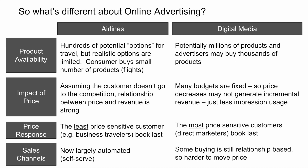They may simply generate more impressions. The other important dynamic when contrasting airlines with digital media is the price response. In airlines, the least price-sensitive customer is the business traveler, and they're going to book last. In the case of digital media, the most price-sensitive customers tend to be direct marketers who are trying to buy clicks or get consumers to click through to their site — and they tend to book last rather than first, basically sucking up the remnant inventory that's available.